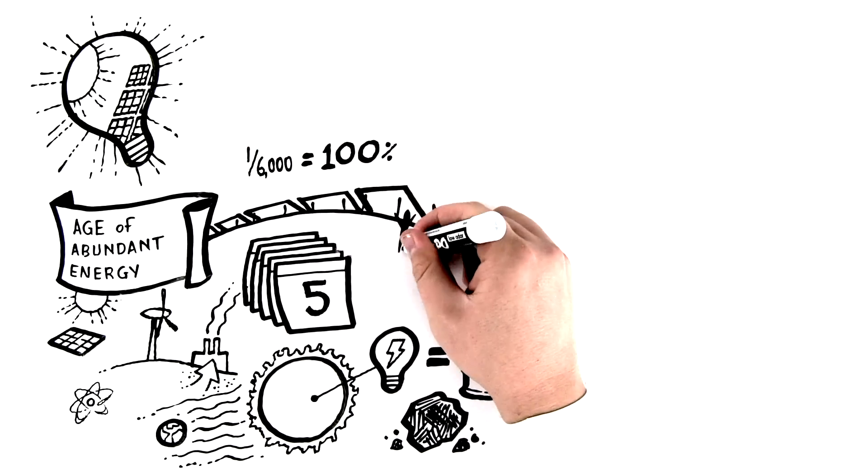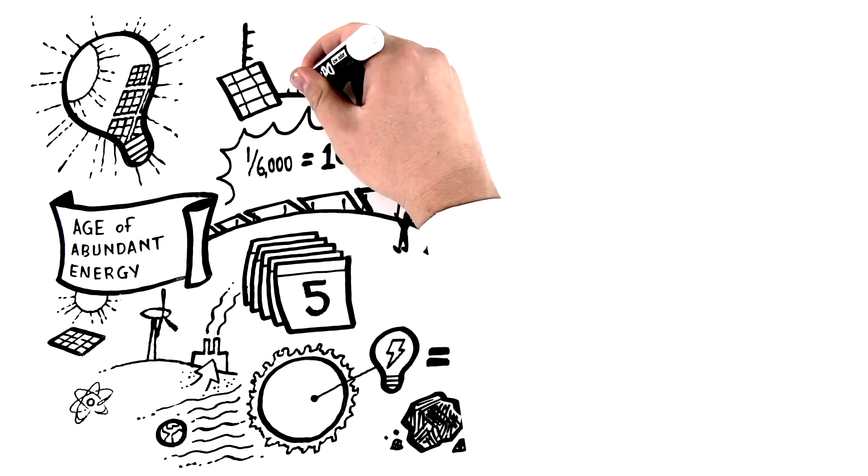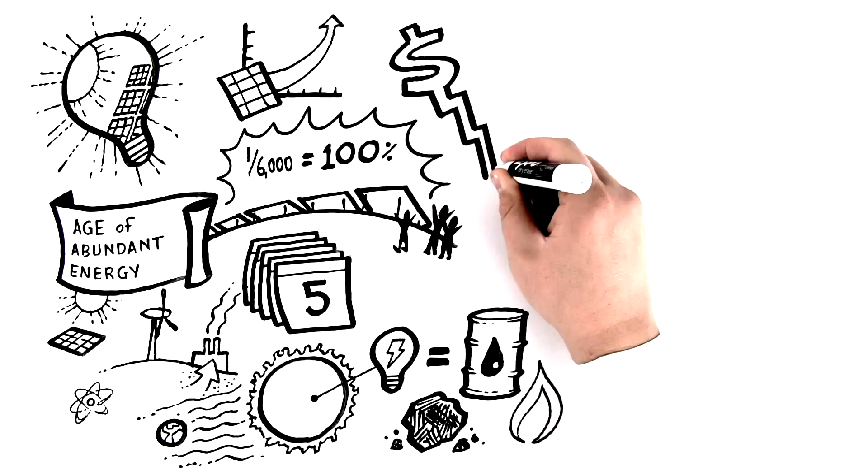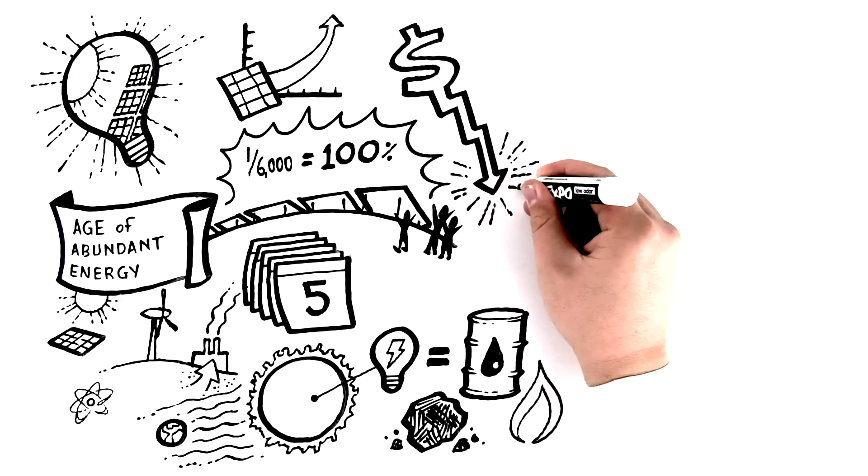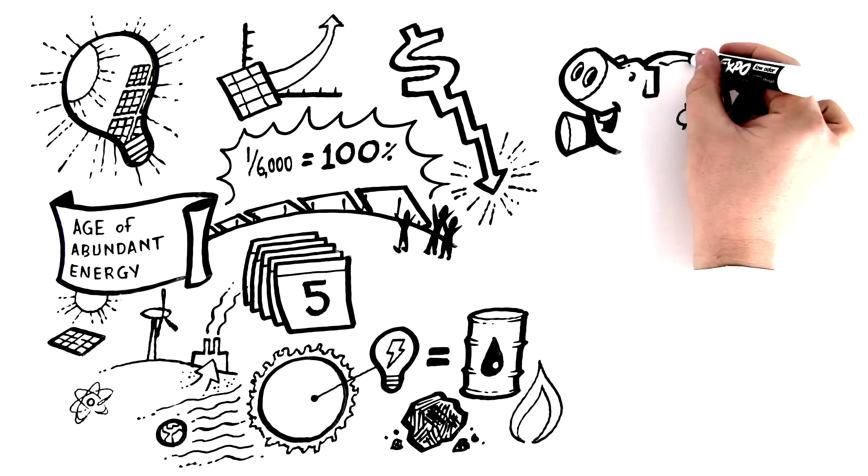Luckily, installed solar capacity is growing exponentially and prices are plummeting, dropping 250-fold in just 40 years. Today, the price is less than three cents per kilowatt-hour, or less than half the cost of coal and natural gas.